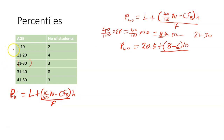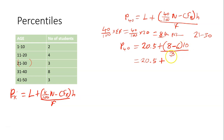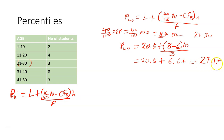The F is the frequency of the 40th percentile class, which is 3. So we have 20.5 plus — 8 minus 6 is 2, times 10 gives 20. And 20 divided by 3 gives 6.67. So 20.5 plus 6.67 gives 27.17. This is the 40th percentile.